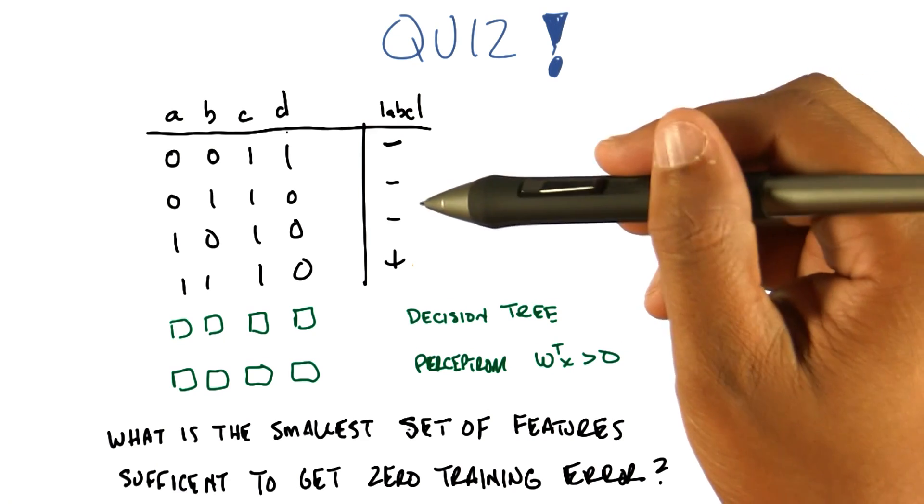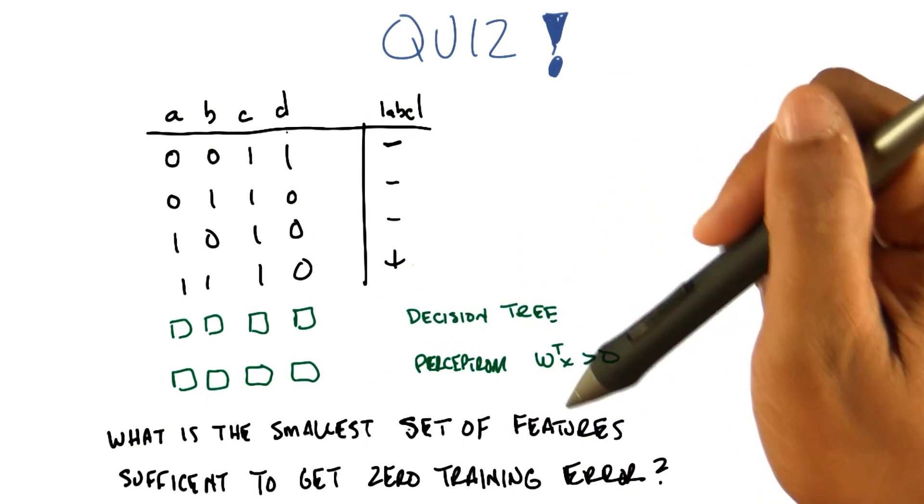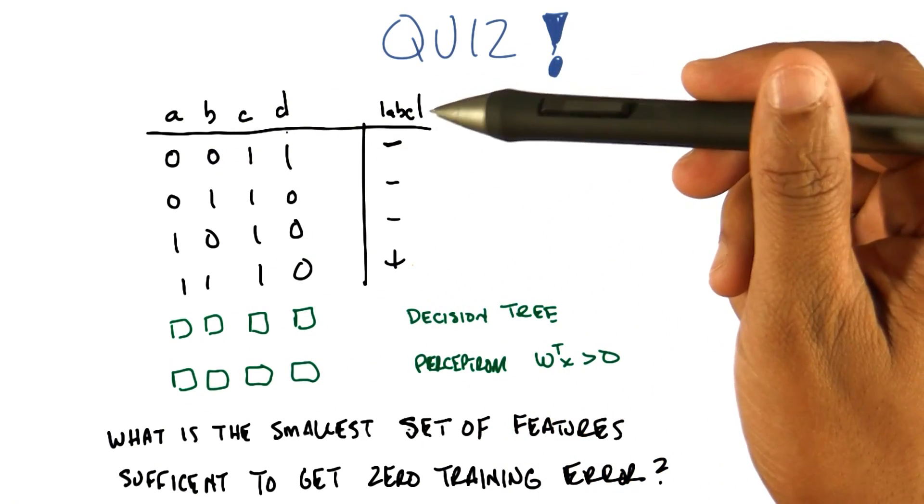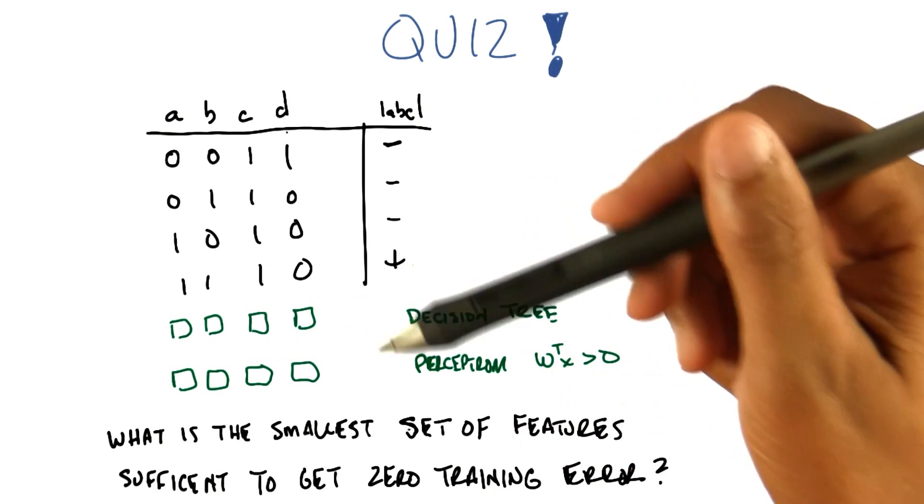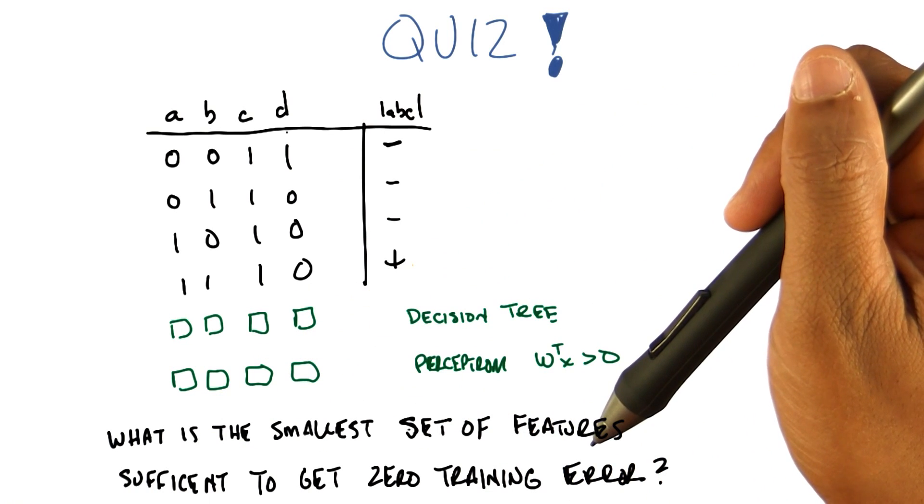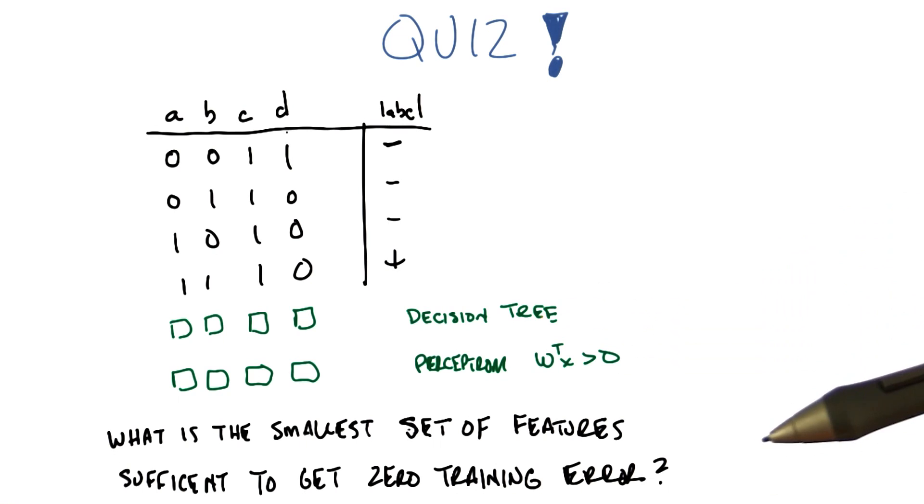And here's what I want you to do. I want you to find the smallest subset of features of A, B, C, and D that's sufficient to get zero training error for these two different learning algorithms.